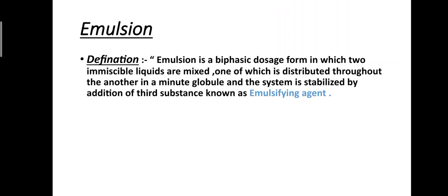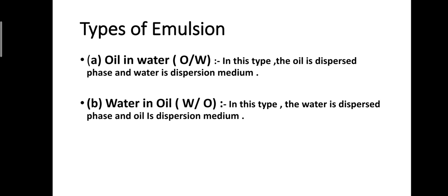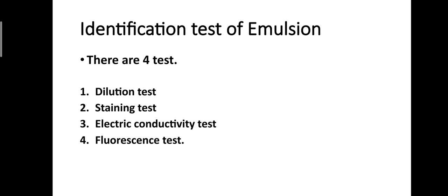Types of emulsion: there are two types. First, oil in water (O/W): the oil is the dispersed phase and water is the dispersion medium — oil is in small quantity, water in large quantity. Second, water in oil (W/O): water is the dispersed phase and oil is the dispersion medium — water in small quantity, oil in large quantity.